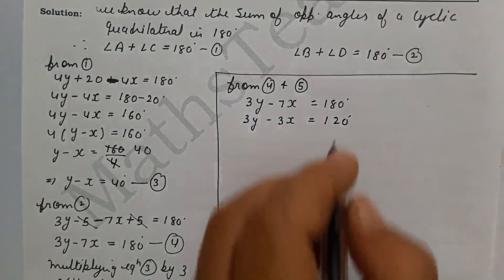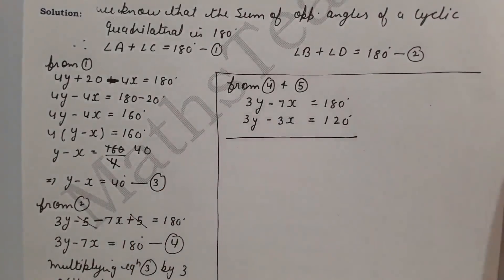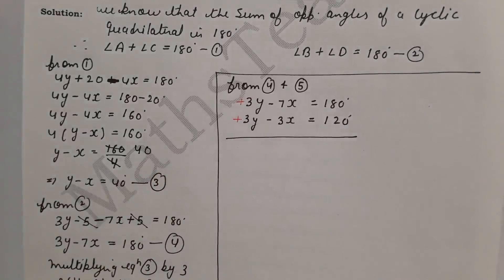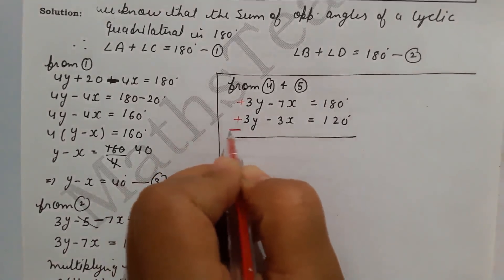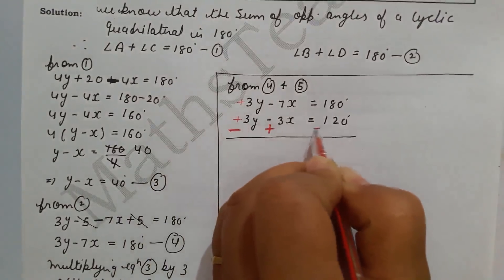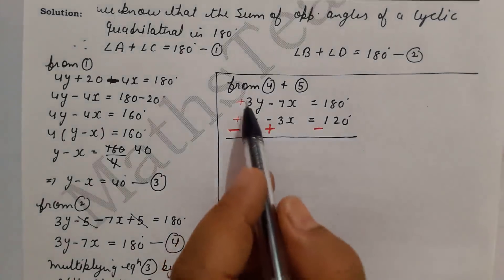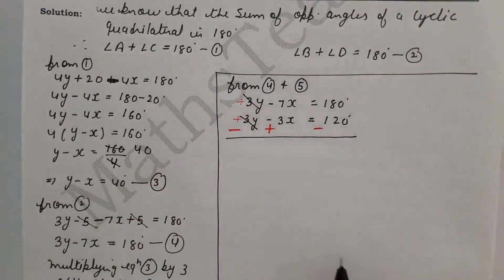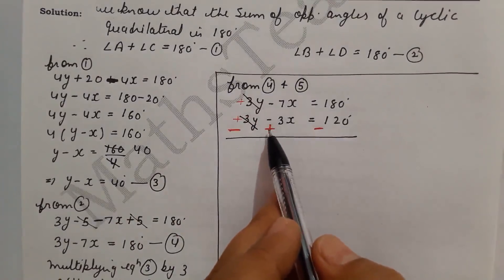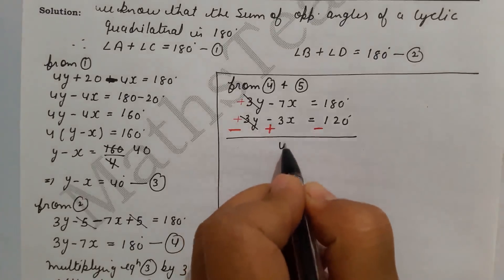Since both equations have 3y with a positive sign, we eliminate y by subtraction. We change the sign of equation 5 to negative and subtract. The 3y terms cancel. We are left with minus 7x minus (minus 3x), which gives minus 4x.